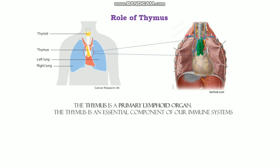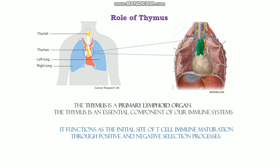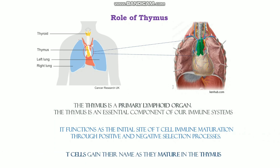The T cells originate in the bone marrow, then travel to the thymus where they mature and get activated. The thymus is the primary lymphoid organ and an essential component of our immune system. It functions as the initial site of T cell immune maturation — which is why T cells got their name, because they mature in the thymus.